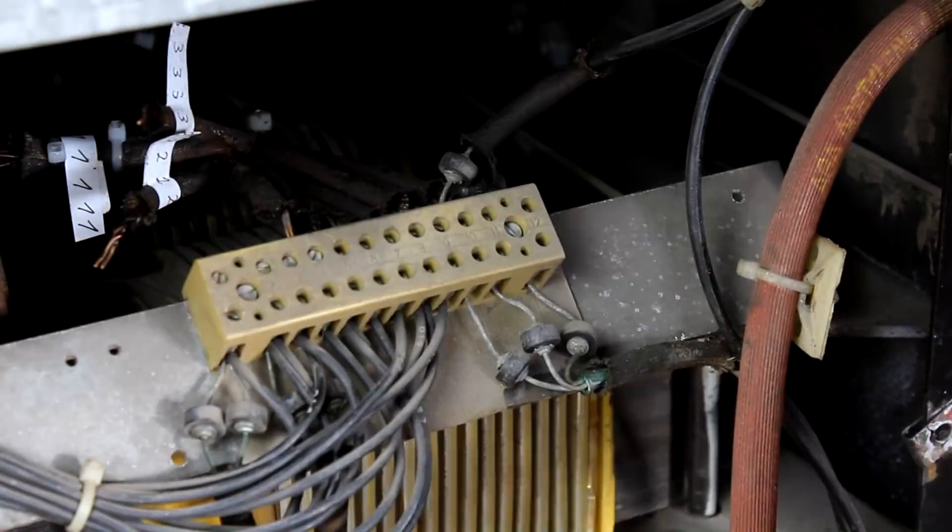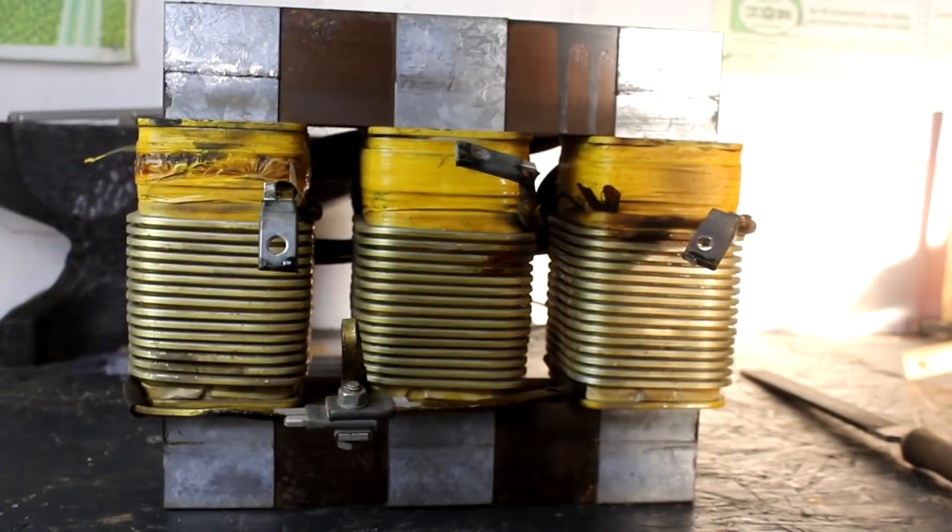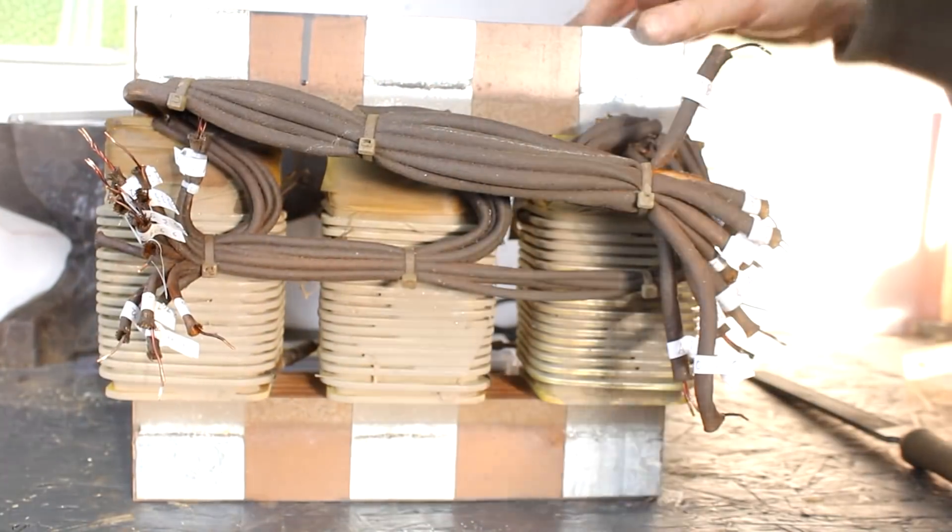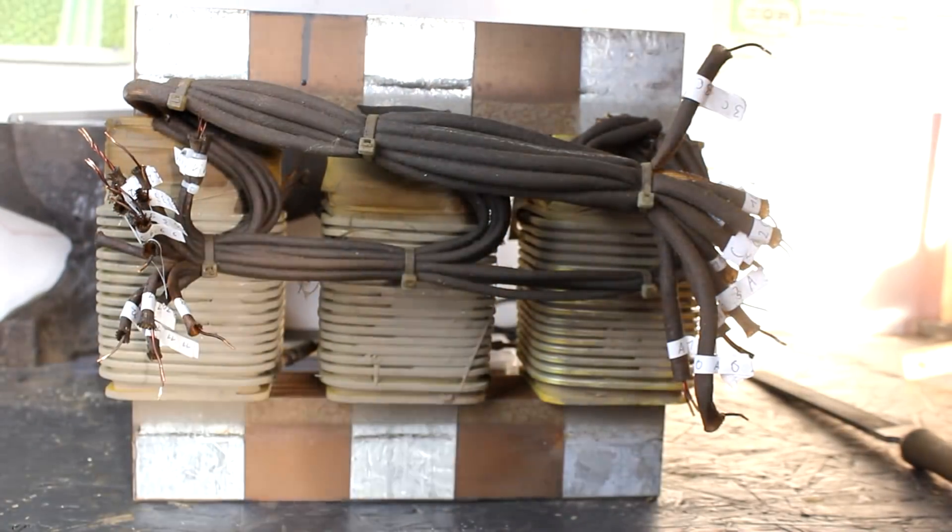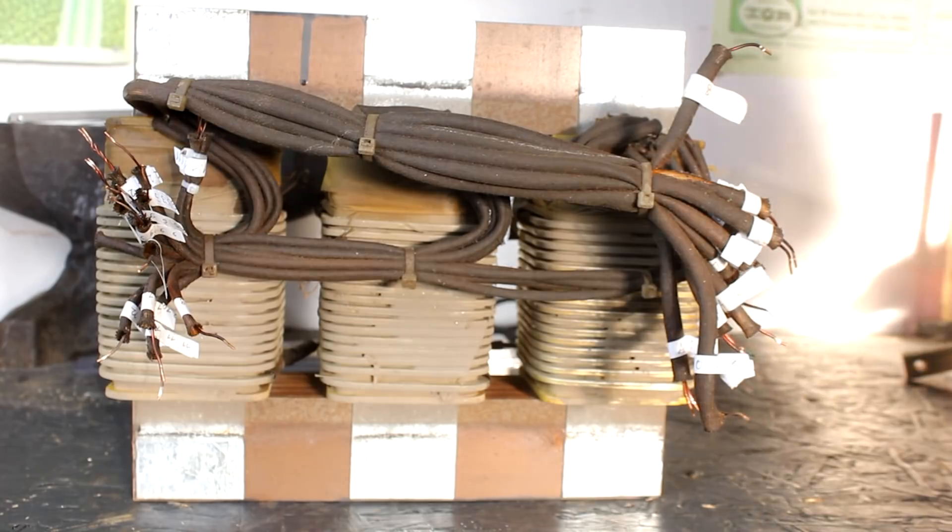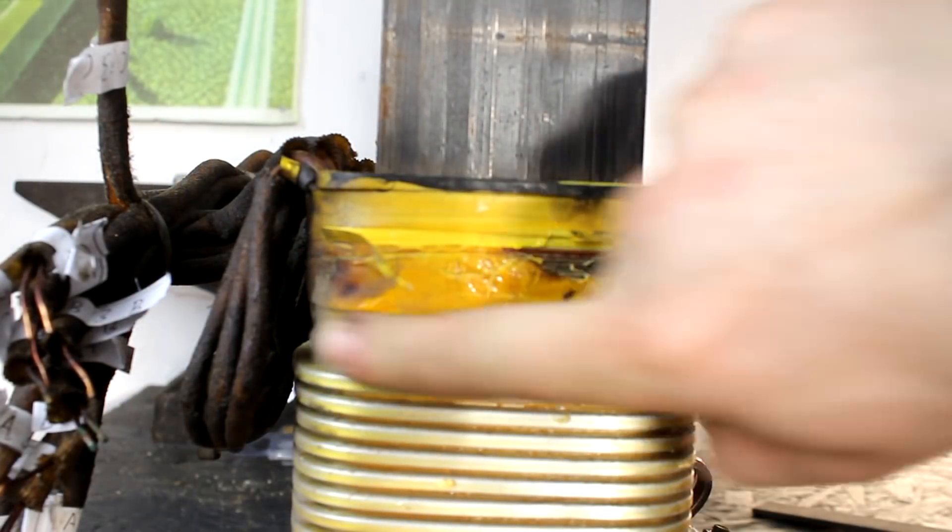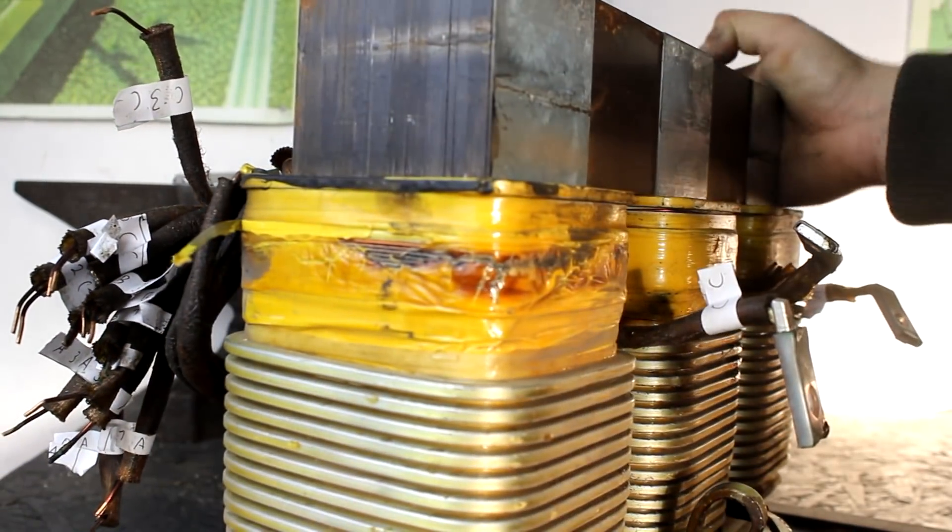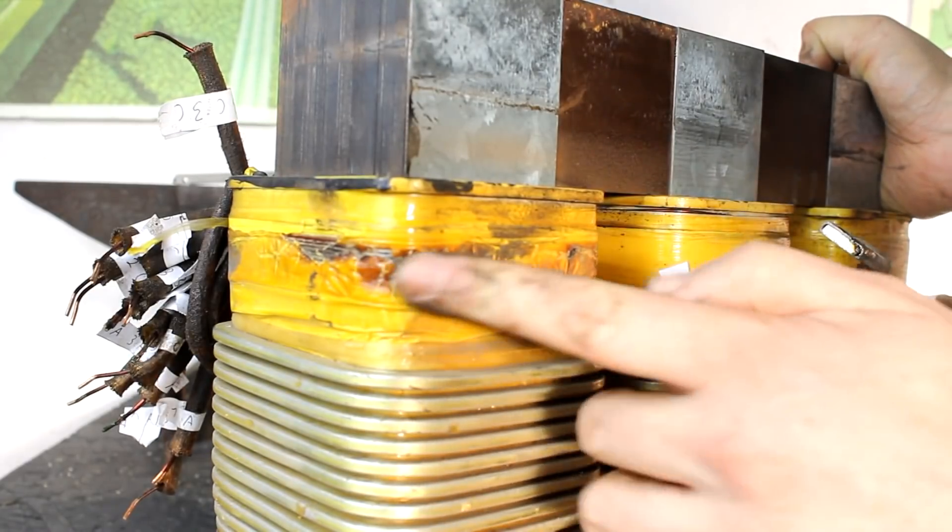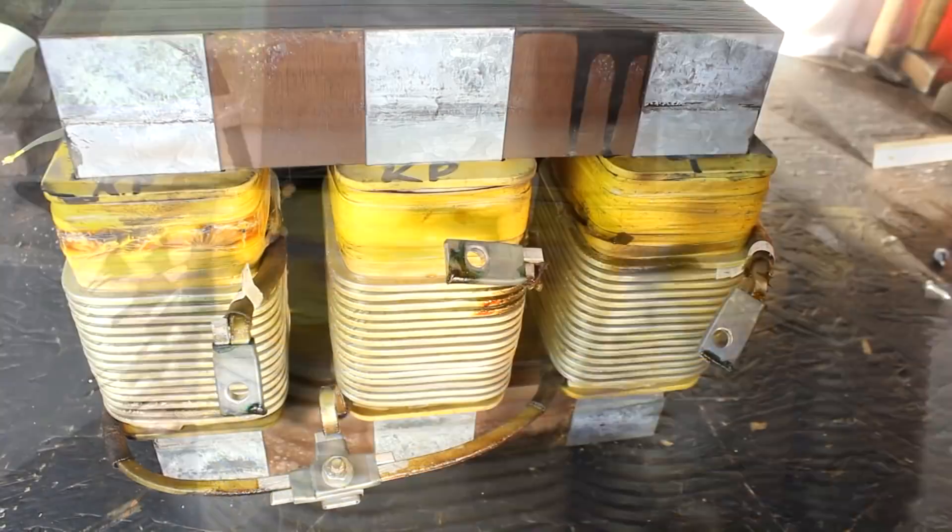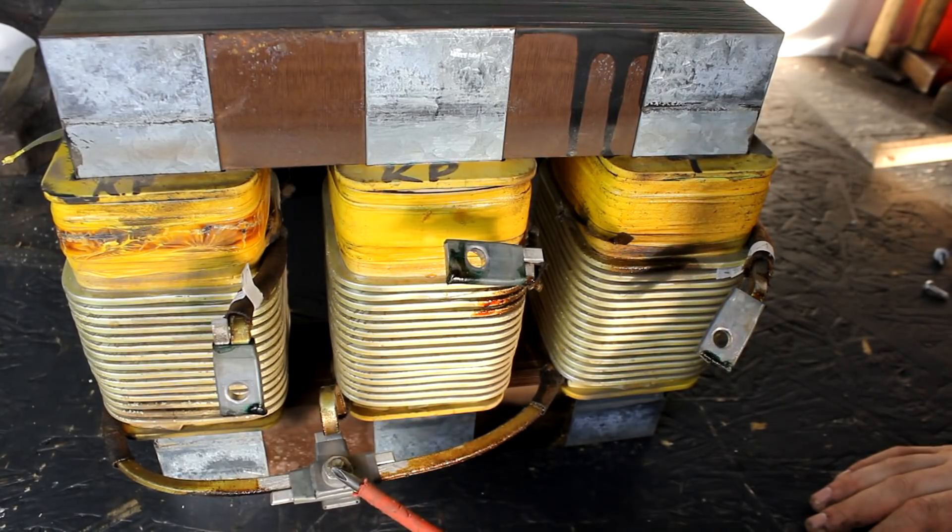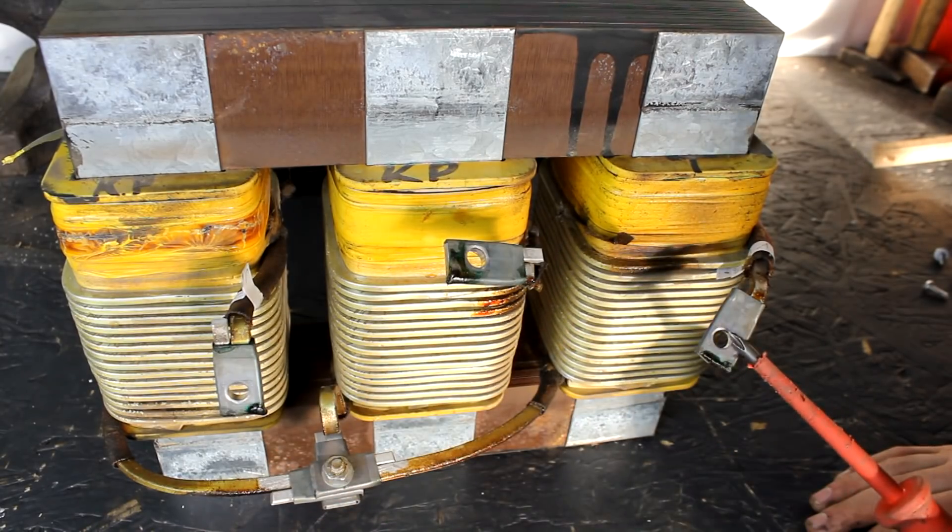So here is the transformer on the workbench. And we can see some of the damage and also the large number of secondaries and connections to the secondary. If we turn the transformer around, we can see that it's really that one spot where the tape is burnt all around that one leg of the transformer.